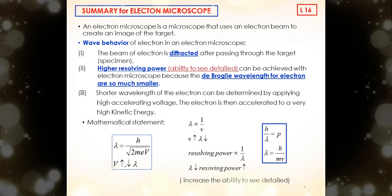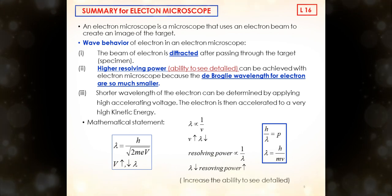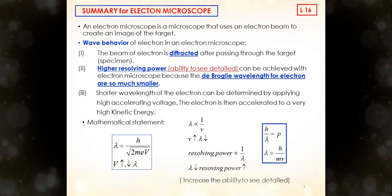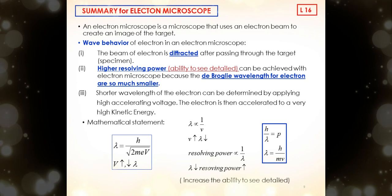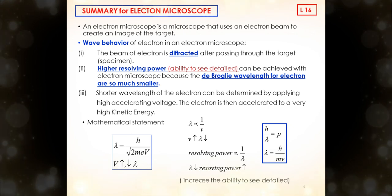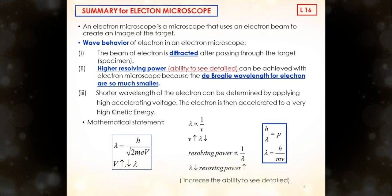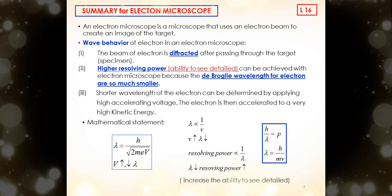In mathematical statement, we can see that lambda is inversely proportional to the velocity of electron. The higher the velocity, the shorter is the wavelength. The resolving power is inversely proportional to the lambda. When the lambda is shorter, then the resolving power is higher, which means we can see a more detailed image.